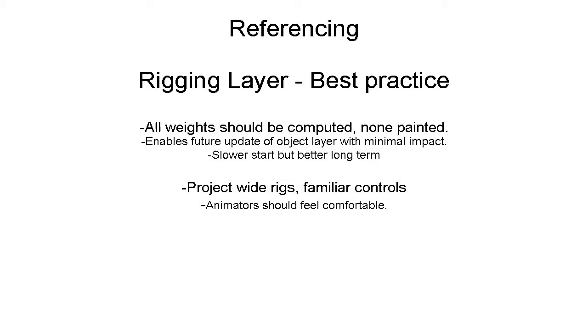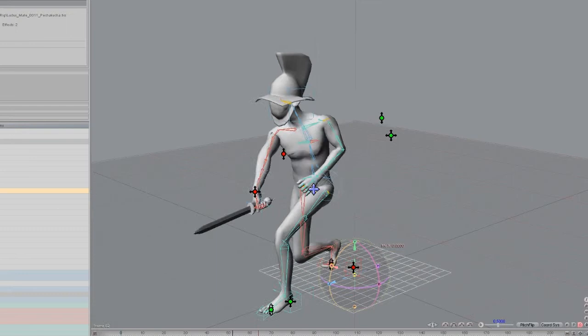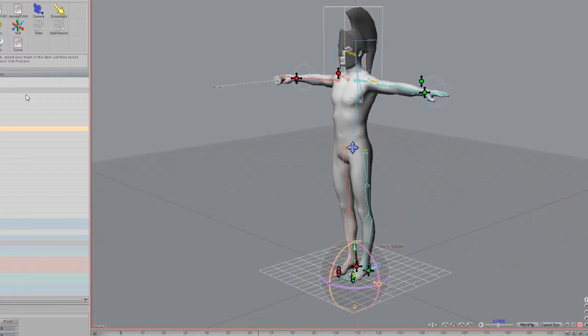I'm showing an example here where we have a single character with a sword and a helmet, and I can just literally replace the helmet. Because all of the weights are automatic in this program, I don't need to do anything new to update it — it literally is just already there, already rigged.